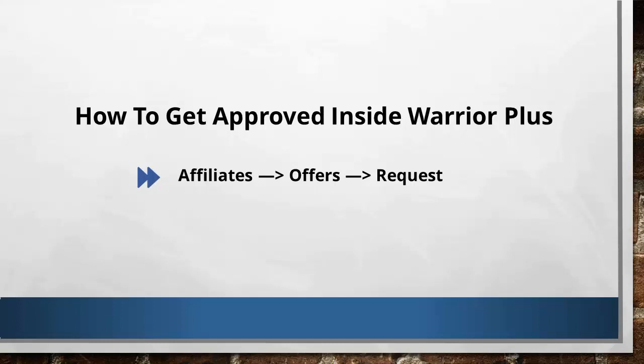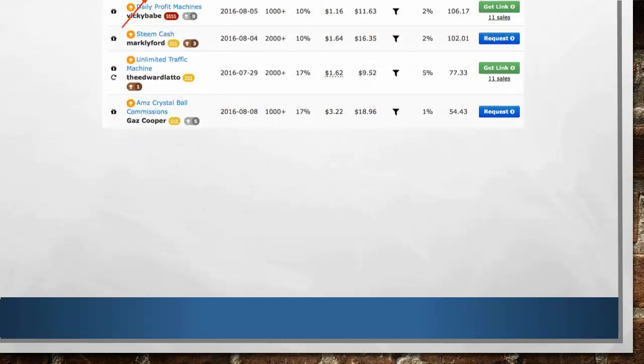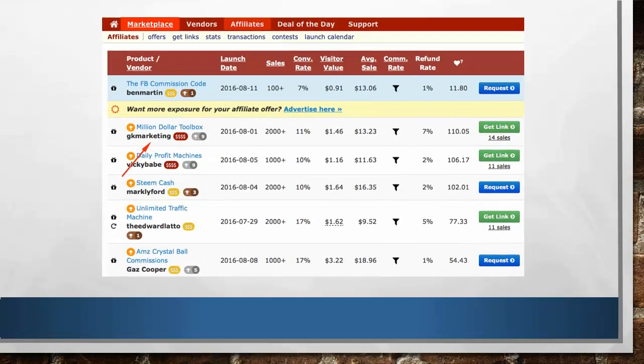I'm teaching you how to overcome these dilemmas in this video as well. First, let's go back to warriorplus.com. Click on Affiliates and then Offers. On this page, you'll see the latest affiliate offers inside Warrior Plus. On the right side, you can see the number of sales I've gotten on the products I've promoted. The notification signs you see are for new offers that just launched.